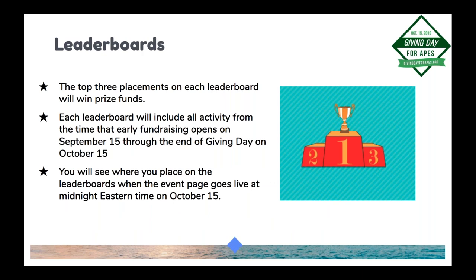Because the system is automated, it's possible that one organization may win several golden tickets or a combination of power hour and golden ticket prizes — we've seen this in past years. The leaderboards: the top three placements on each leaderboard will win a prize. Leaderboards calculate all fundraising activity from the time early fundraising opens on September 15th through the end of Giving Day. You'll see your donation amounts on the admin side, but leaderboard placement won't be visible until Giving Day begins at midnight Eastern on October 15th.